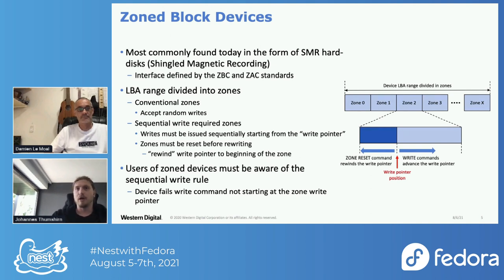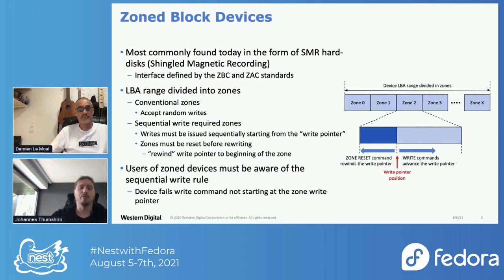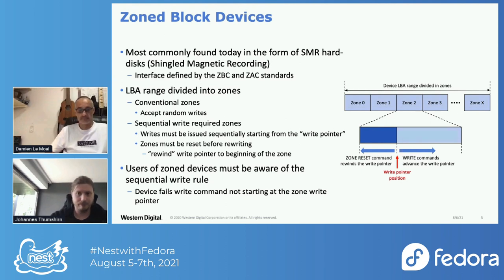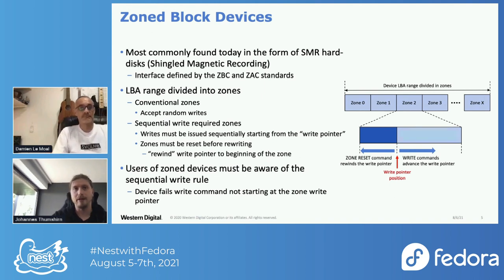And then there are sequential write required zones, which have a write pointer. You always have to write at the write pointer. Once the data has been written, the write pointer advances and the next data has to be written at the write pointer again. To write data before the write pointer, you have to reset the complete zone, erasing all the data to rewind the write pointer to the beginning of the zone and start writing again. That's a constraint that users of zone block devices must be aware of.